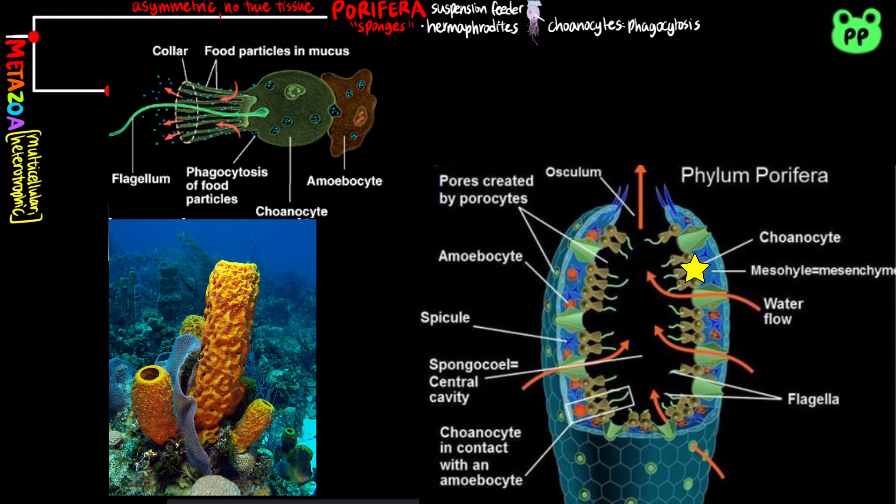Water is drawn through pores into a cavity called the spongocoel and out through an opening called the osculum. Sponges consist of a noncellular mesohyle layer between two cell layers.